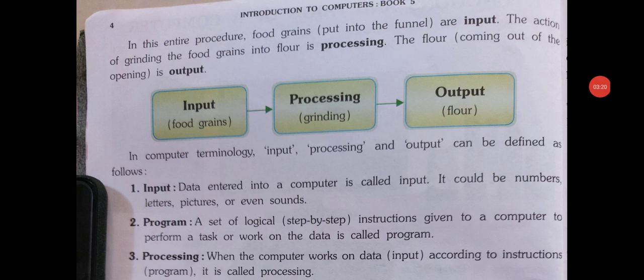So basically in this entire procedure: food grains put into the funnel are input. The action of grinding the food grains into floor is called processing — jo action rehti hai food grains ki jo food grinder mein barik kiya jata hai floor — woh rehta hai processing. And the floor coming out of the opening is the output — jo ban ke pura ka pura crush hokar nikal raha hai usko kehte hai output.